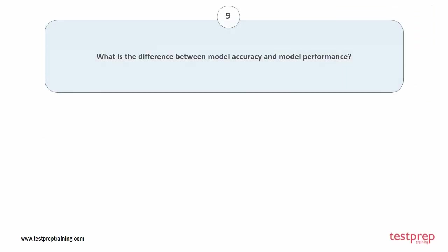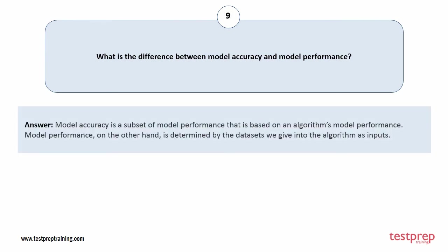Question number nine: what is the difference between model accuracy and model performance? Model accuracy is a subset of model performance that is based on an algorithm's model performance. Model performance, on the other hand, is determined by the datasets we feed into the algorithm as inputs.